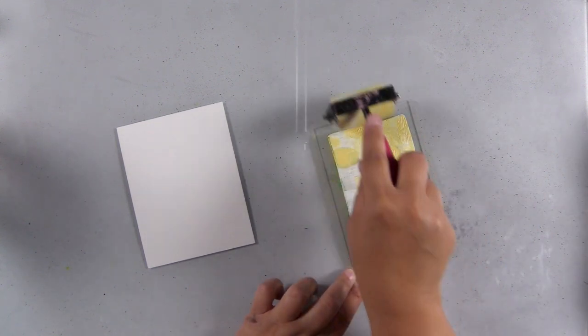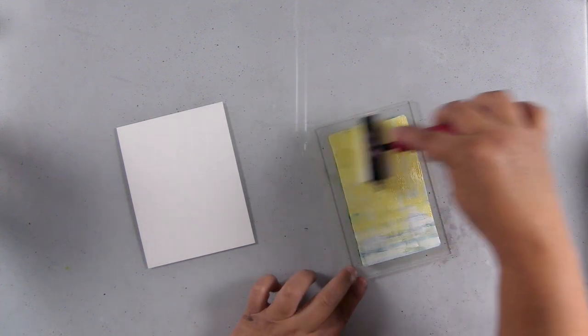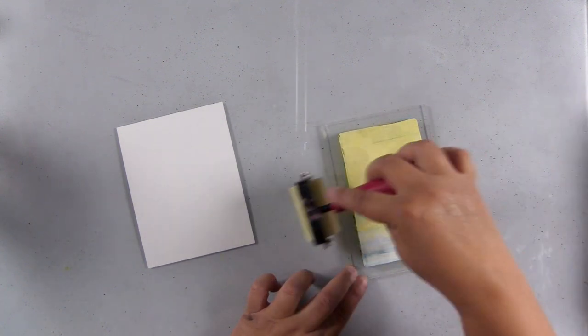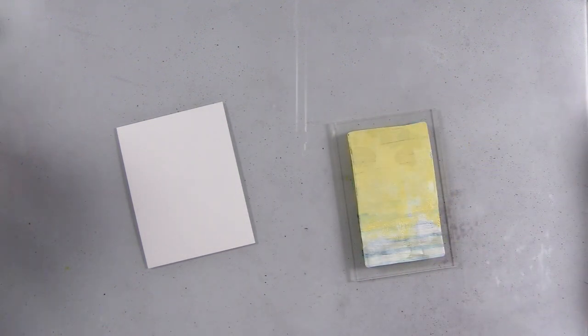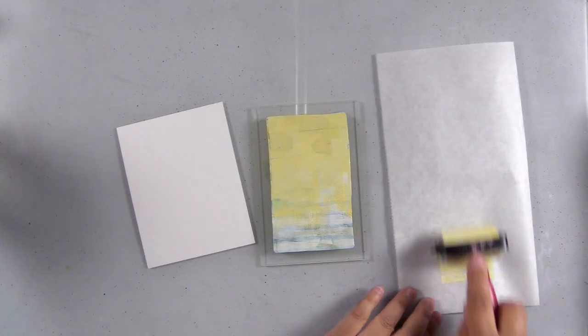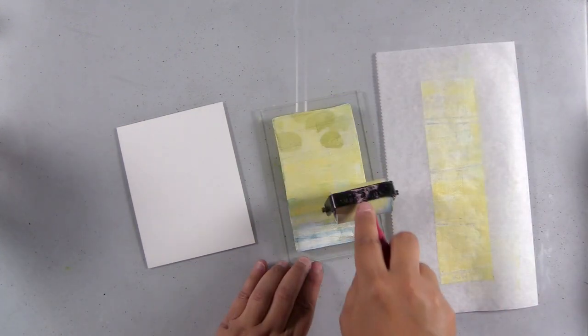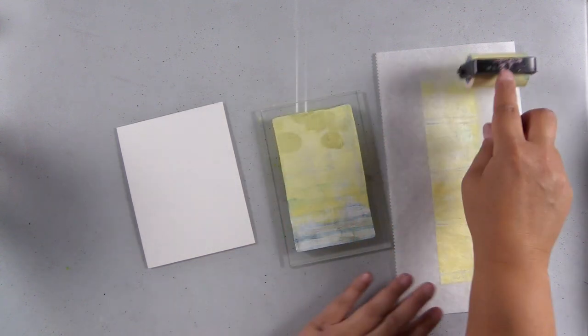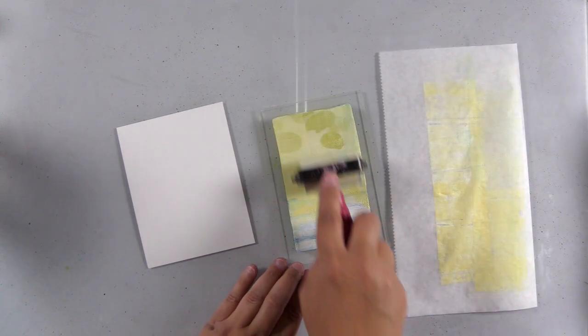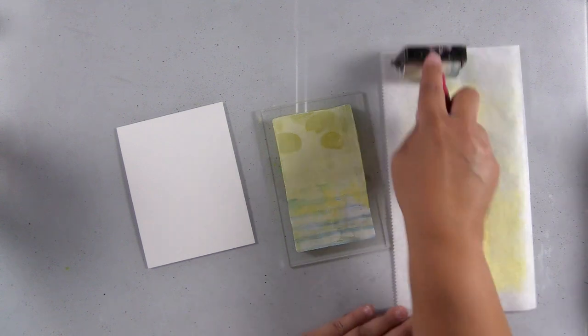So there's going to be very little yellow on this plate because I saturated the plate with white before I even got to the yellow. And you'll see that once I pull the print, but it's totally okay. It ends up working out. But if you want more yellow on your plate, make sure you clean your brayer in between going from one color to the next.